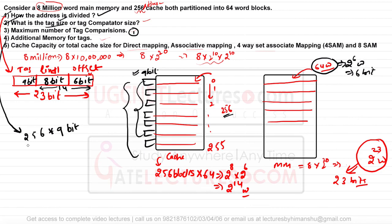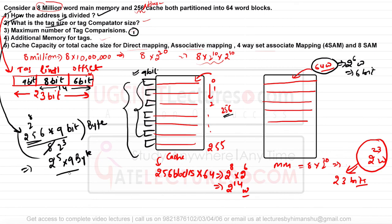Converting tag memory to bytes: 256 × 9 bits ÷ 8 = 2^8 × 9 ÷ 2^3 = 2^5 × 9 bytes. So you require 2^5 × 9 bytes of additional memory for the tags. There are 9-bit tags across 256 lines; multiply them together and divide by 8 to convert bits to bytes.